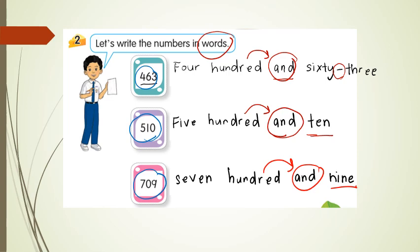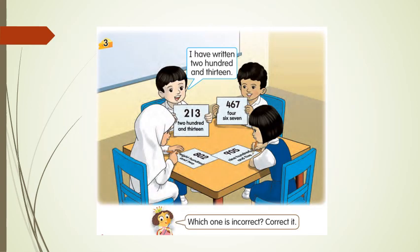Look at the third example. I have written two hundred and thirteen. So two hundred and thirteen — let's check. It's two hundred and thirteen. Is it correct? Yes, it is correct.